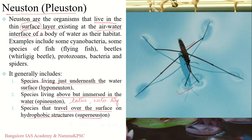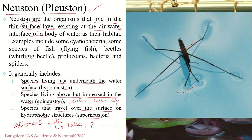Neuston — sometimes also referred to as pleuston — are generally found in stagnant water such as lakes and ponds. If there is a lot of turbulence, like in a river, these types of organisms will not be found there. This makes up the first type of aquatic organism.